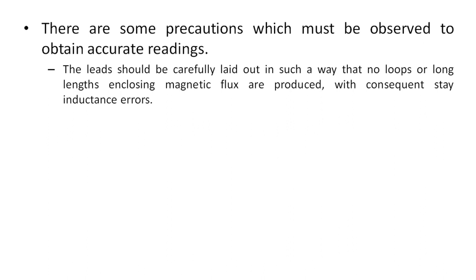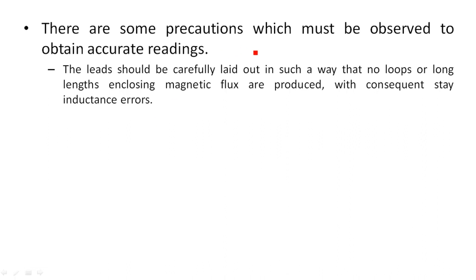There are two points here: no loops, and no long wires. No loops means that the wire used in the bridge should not form any loops, because loops can introduce an inductance value. Similarly, if the wire connecting internal components of the bridge is very long instead of short, that long wire contributes resistance, capacitance, and inductance values to the circuit.